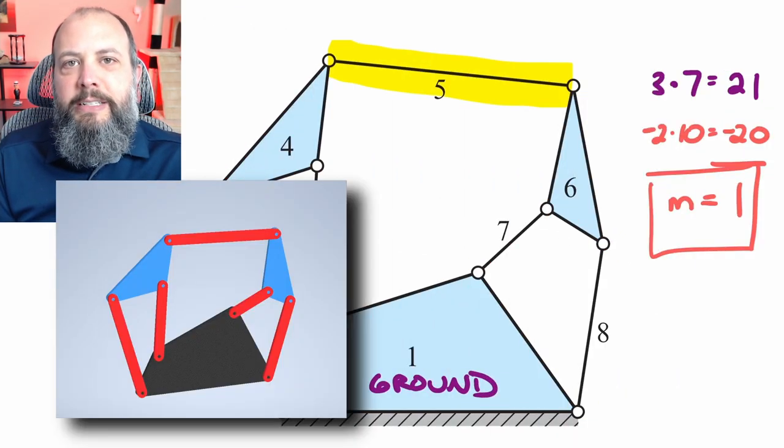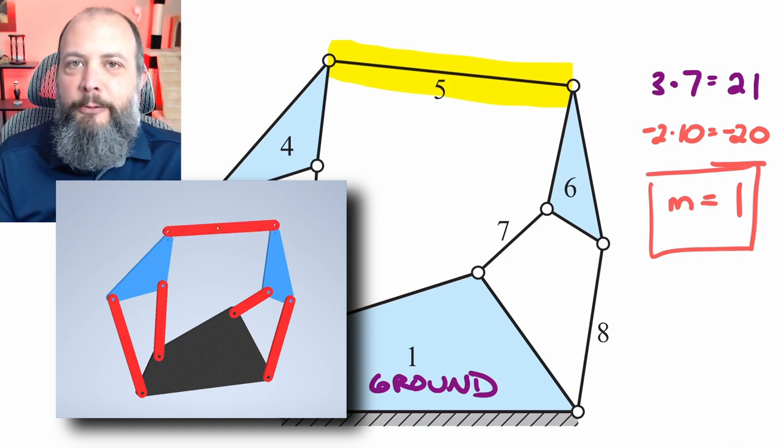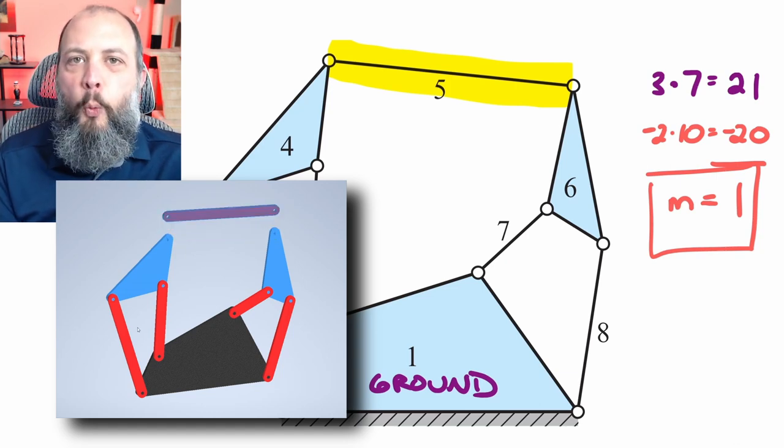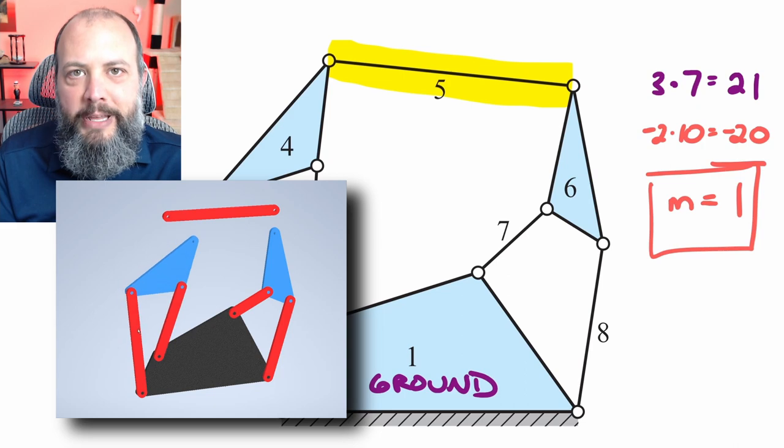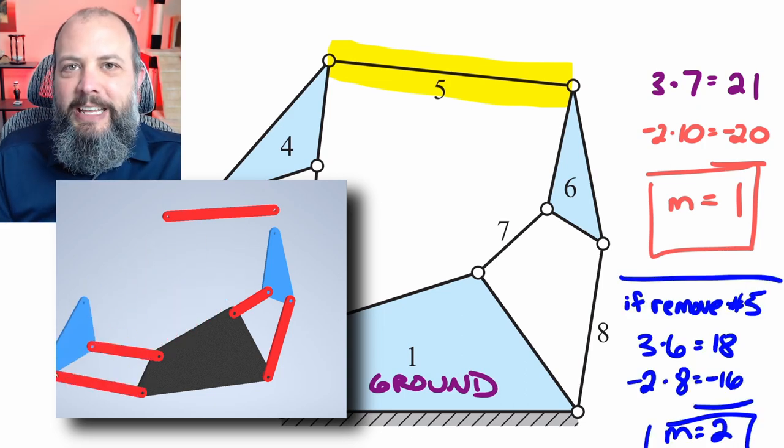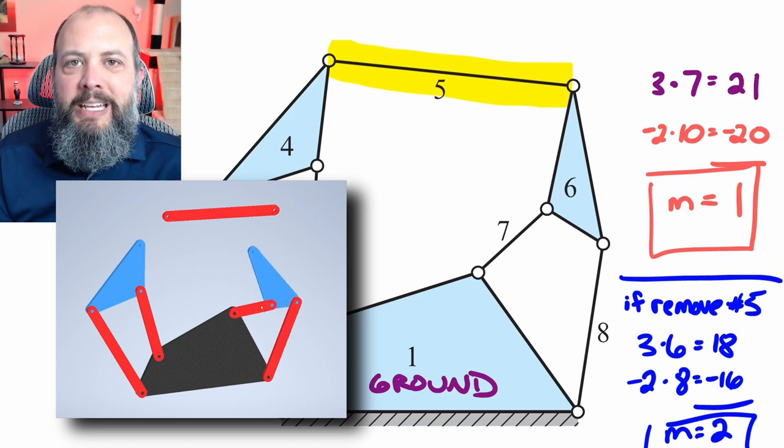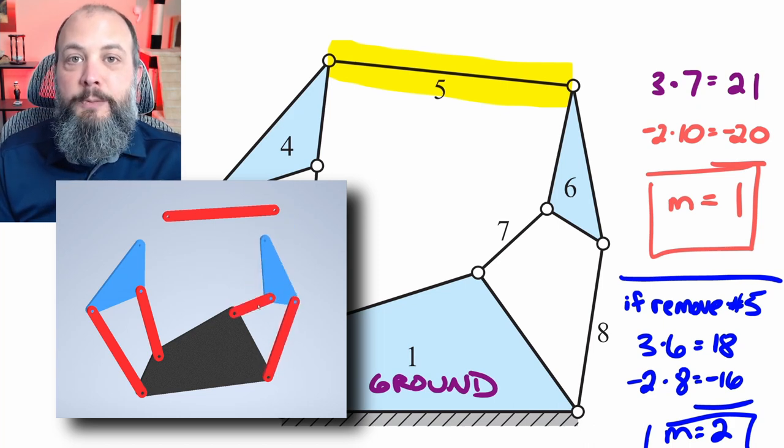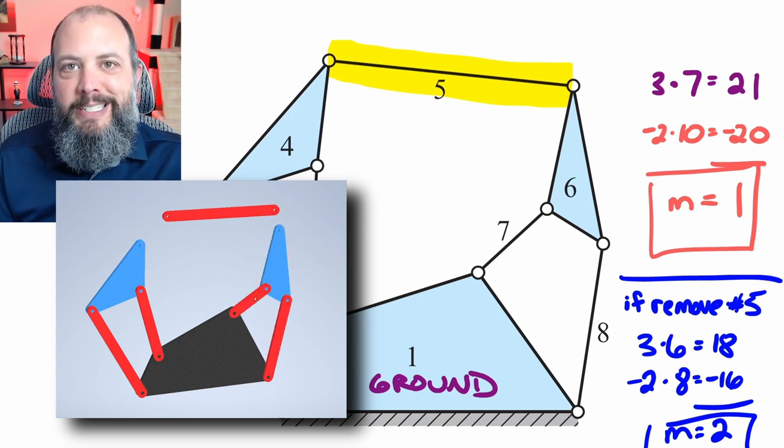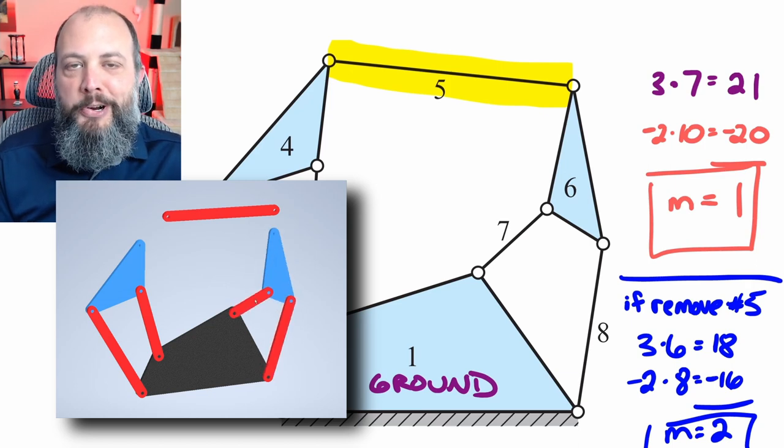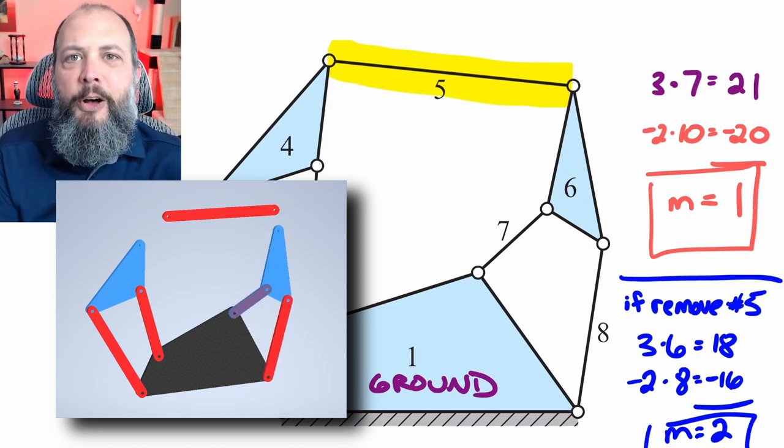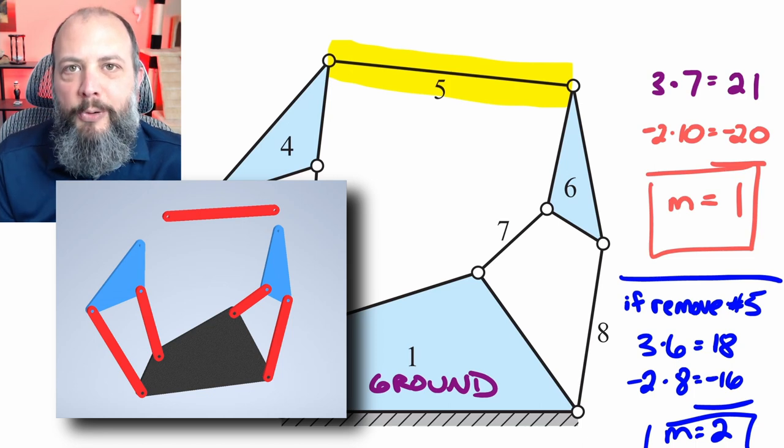Now, just to explore what mobility means, suppose we removed link five, this highlighted link. If we remove that link, we'd be removing one link and two joints. So if we have six links and only eight joints, we'd be left with M equals two. Mobility higher than one means it takes more than one motor to control the system. Or if you only have one motor, then there'd be extra pieces just sort of flopping around with multiple possible configurations.